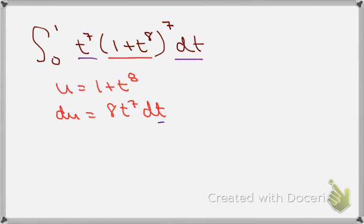I see here I have t to the seventh dt. The only thing is I have that 8 in front. So I'm going to make a change by dividing both sides by 8. So I get one-eighth du equals t to the seventh power dt.